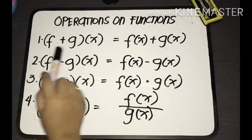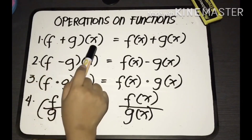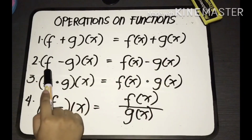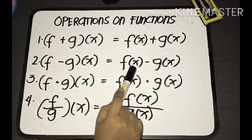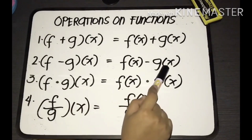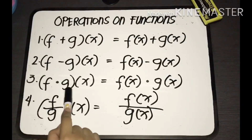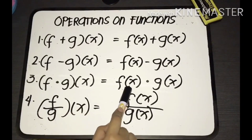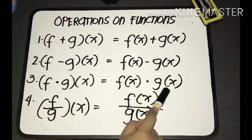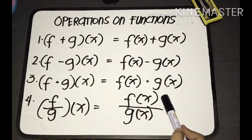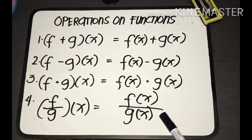For the addition of functions, we have f plus g of x, or f of x plus g of x. For subtraction, we have f minus g of x, which is equal to f of x minus g of x. In multiplication, we have f multiplied by g of x, equal to f of x times g of x. And for division, we have f over g of x, equal to f of x over g of x.